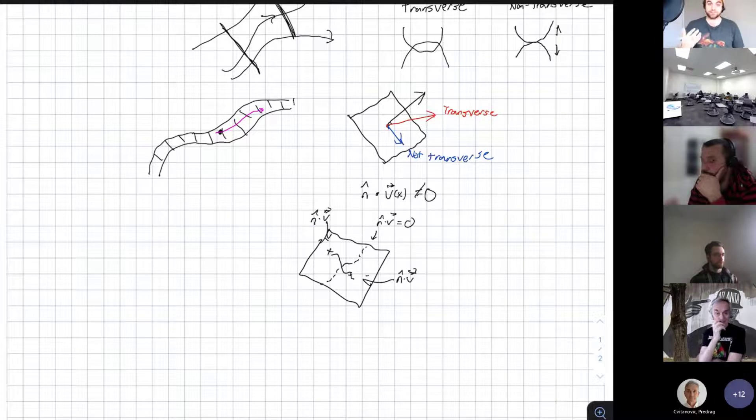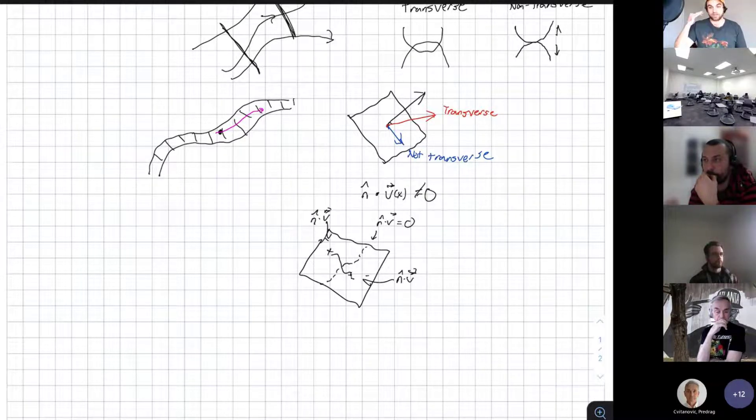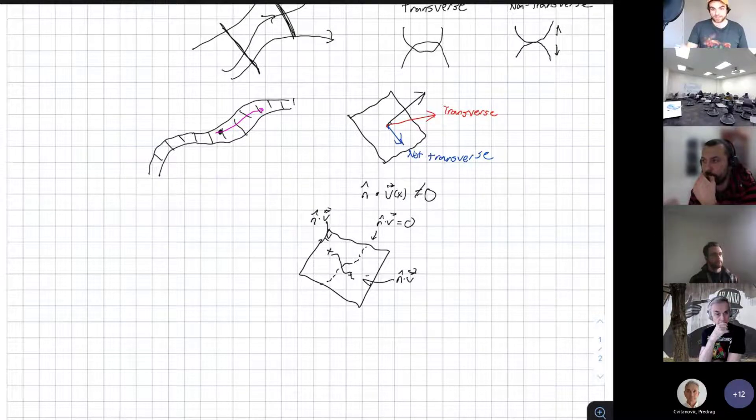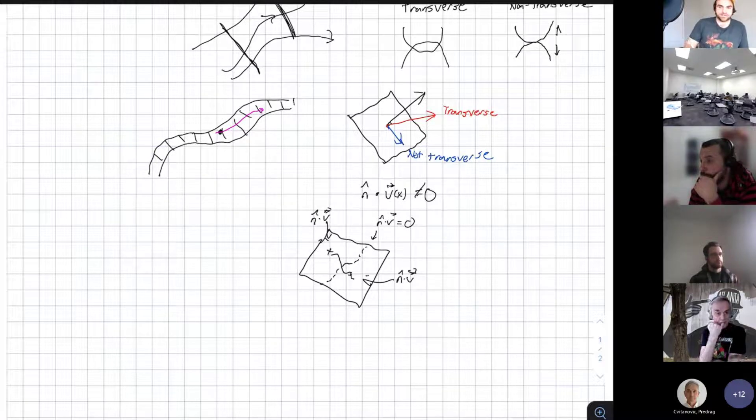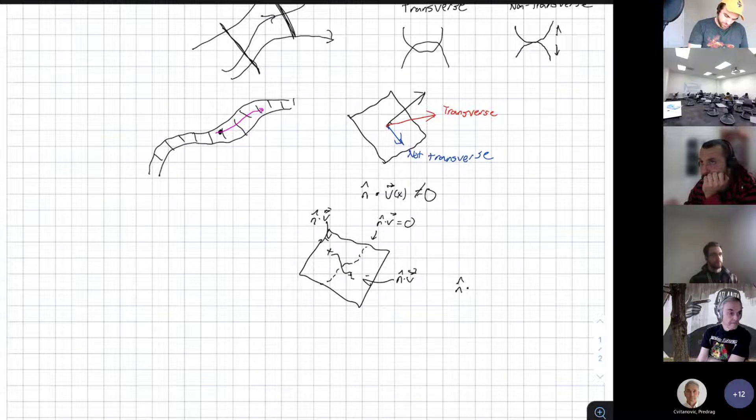The way we set that up computationally is just saying that if we have some normal vector associated to our plane, you can extend this to any hypersurface using the gradient if it's a level curve of some function, dotted with our vector field at the point, this is not equal to zero. So if the dot product is not equal to zero, that means that there is at least some component either along this normal vector or directly against it, which means that we're not flowing within the surface or within the plane.